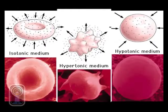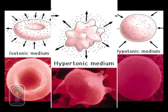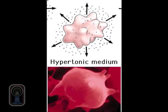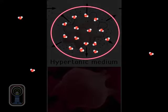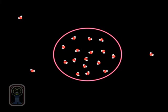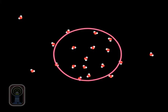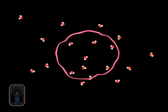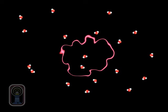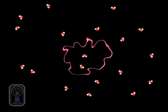If a solution is hypertonic, there is a greater concentration of solute outside the cell than there is inside the cell. As a result, water leaves the cell and the cell shrinks.